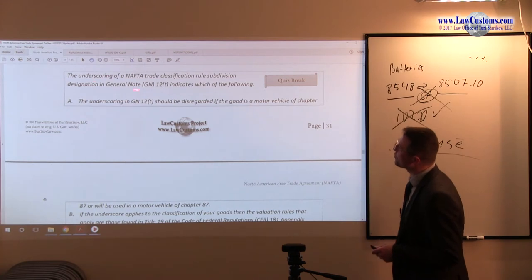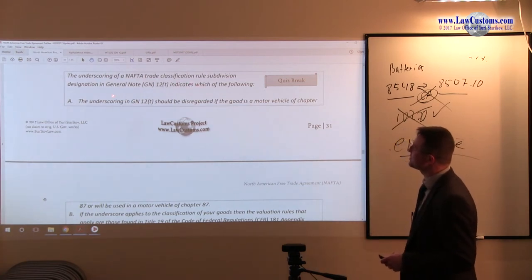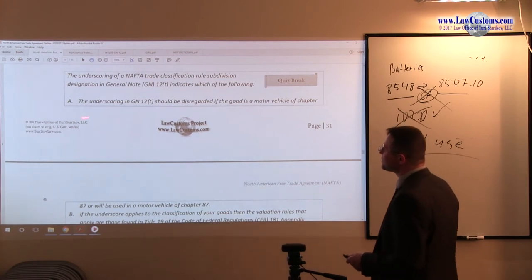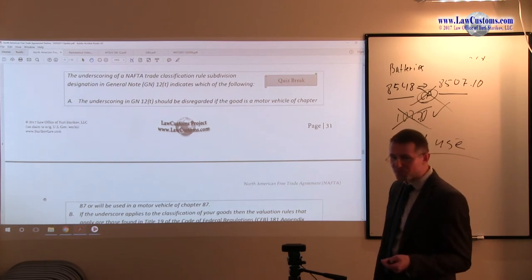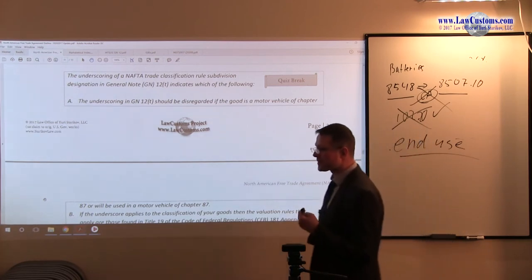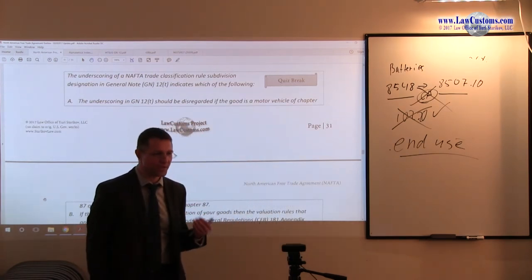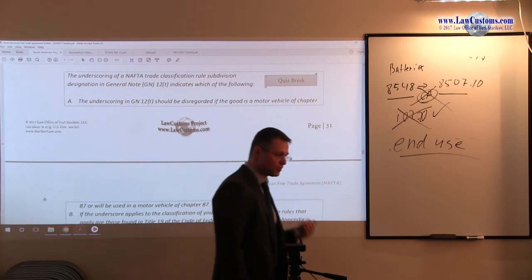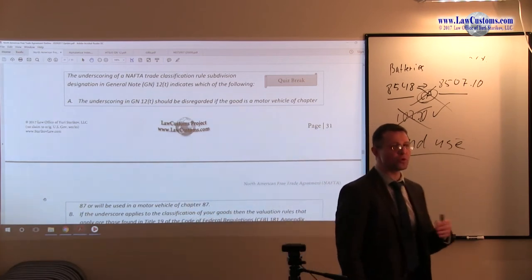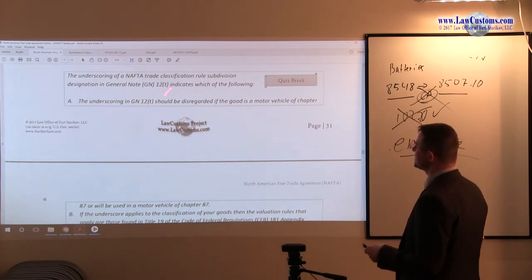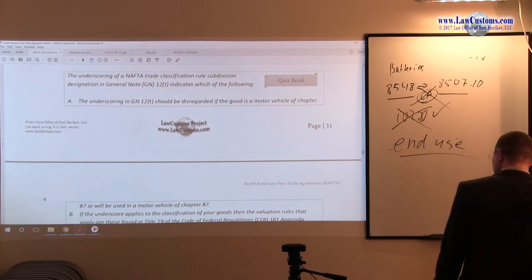The underscoring of NAFTA trade classification rule subdivision designation in GN 12, which is a tariff shift provision, indicates the following. The underscoring should be disregarded if the good is a motor vehicle. No. It specifically refers to motor vehicles. Recall, underscoring, section 8 of the appendix, of NAFTA appendix, section 9 of the NAFTA appendix, automotive goods, and Chapter 87. So those are the buzzwords. Here, disregarded is not the correct answer.